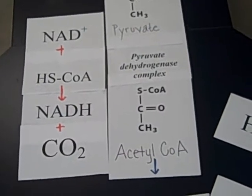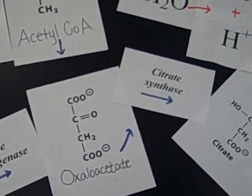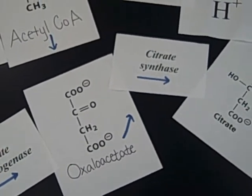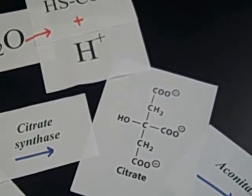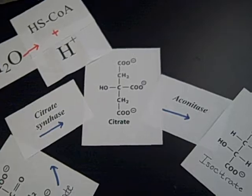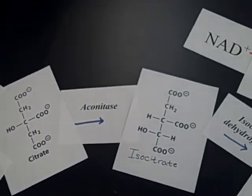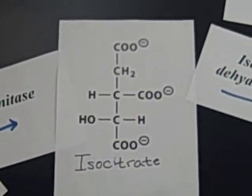The acetyl-CoA can then combine with oxaloacetate with the use of the enzyme citrate synthase to create citrate. To make this proceed, you have to add one water and produce one HS-CoA and one hydrogen. The enzyme aconitase will then change the citrate into isocitrate.